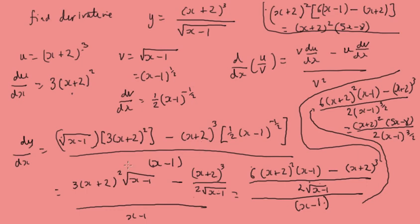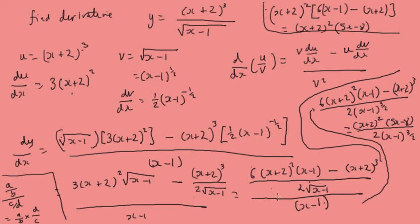Just a reminder about fractions: if you have a over b divided by c over d, that's the same as a over b multiplied by d over c. That's the key step we used to go from one form to the other in our working.